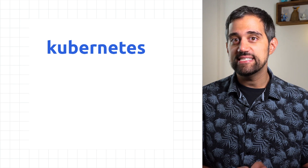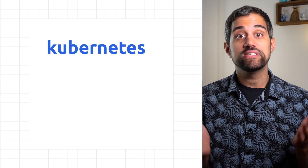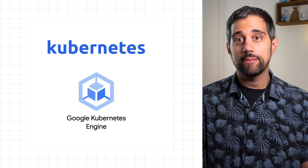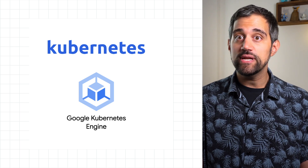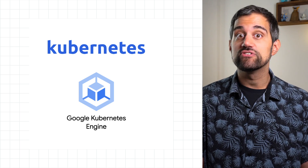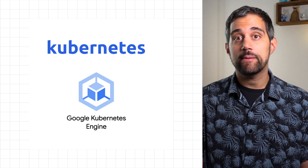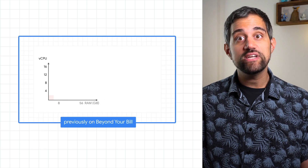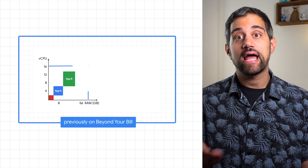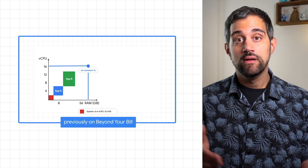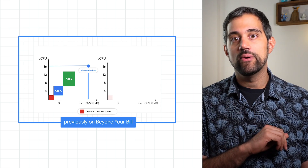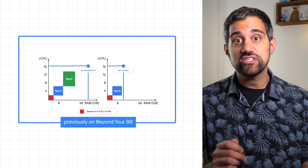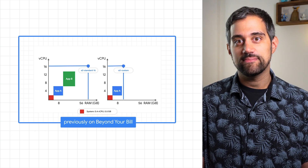One major advantage of Kubernetes is how it was built with scaling in mind, and GKE adds even more options to scale. It can work pretty well without much configuration, but there's a lot of cost optimization potential by going deeper. In the last video, we talked a lot about how to choose the right machine type. As always, it really depends on knowing your application's resource needs, and that's just as important for configuring auto-scaling.